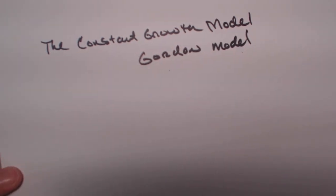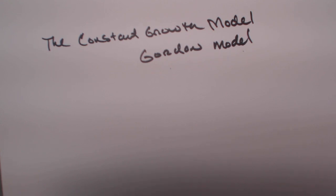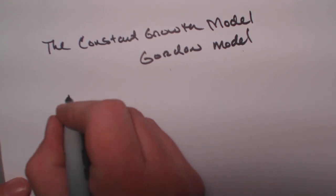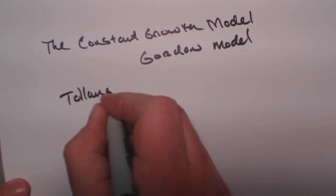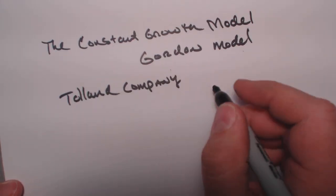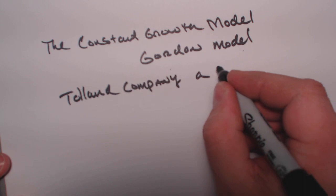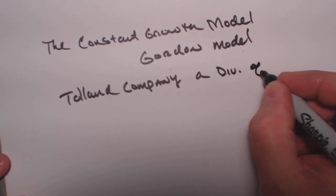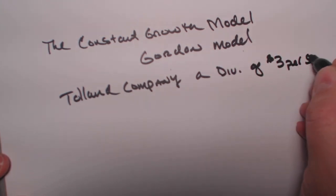Let's set this problem up. Let's call this company the Tolland Company. The Tolland Company, for some time, has been paying a dividend of $3 per share.